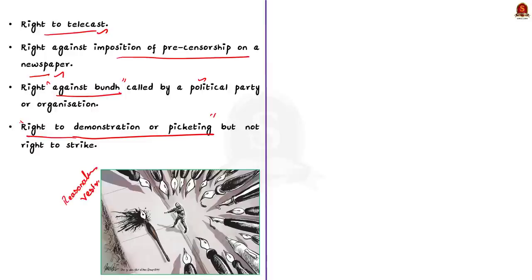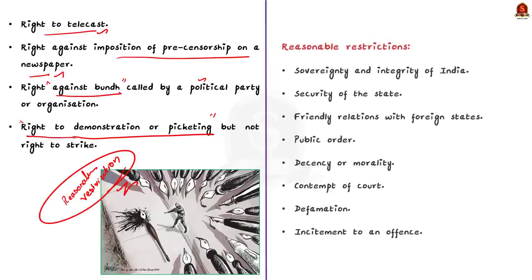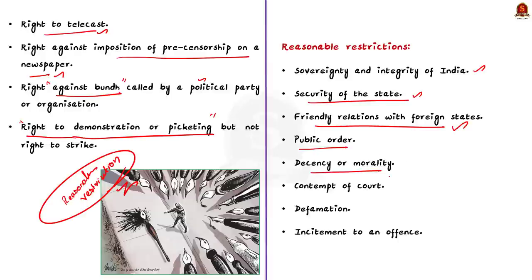Even though the right includes all these rights, the state can still impose reasonable restrictions on the exercise of freedom of speech and expression. Article 19 also provides certain grounds on which these reasonable restrictions can be imposed, including sovereignty and integrity of India, security of state, friendly relations with foreign states, public order, decency or morality, contempt of court, defamation, and incitement of an offense.